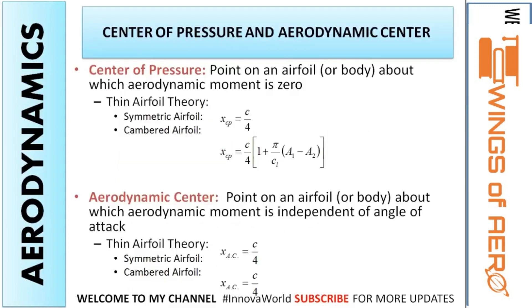Now comes center of pressure — it is the point at which the aerodynamic moment is zero. For a symmetric airfoil, the formula is C/4, that is 25% of the chord. The aerodynamic center is the point at which the aerodynamic moment is independent of angle of attack. The key difference: if the angle of attack increases, the aerodynamic center does not shift — it is constant. But the center of pressure location changes with angle of attack. When the aerodynamic moment is zero, for a symmetric airfoil, the location is 25% of the chord.